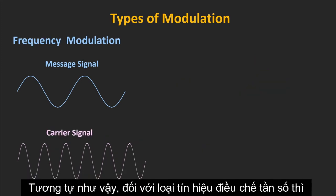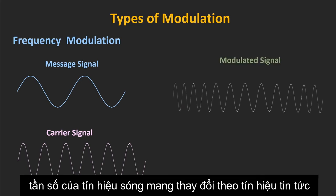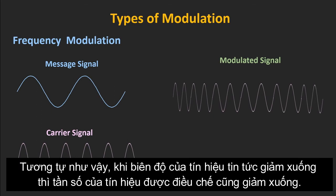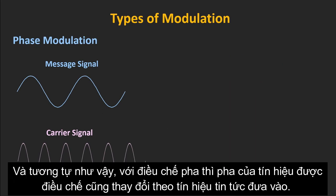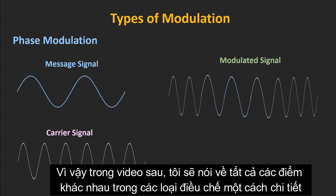In frequency modulation, the frequency of the carrier wave changes according to the message signal. With an increase in the amplitude of the message signal, the frequency of the modulated signal will also increase. Similarly, with a reduction in amplitude, the frequency of the modulated signal will also reduce. In phase modulation, the phase of the modulated signal changes according to the message signal. In upcoming videos, we will talk about all these different modulation techniques in detail.